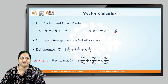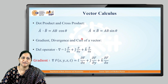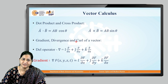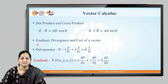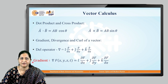When theta is equal to 90 degrees, we get the maximum cross product. Similarly, we can also use other operators and perform operations on vectors such as gradient, divergence, and curl of a vector. For that purpose, we require an operator called the del operator.